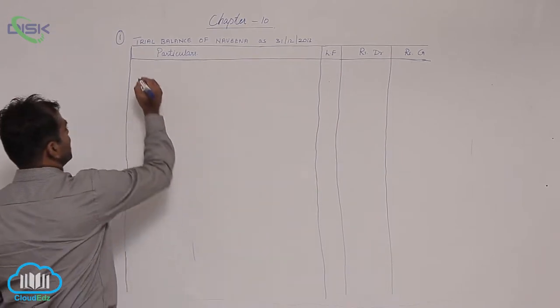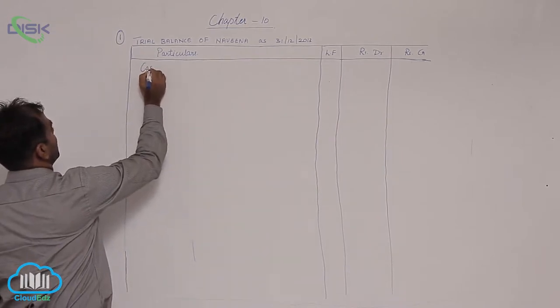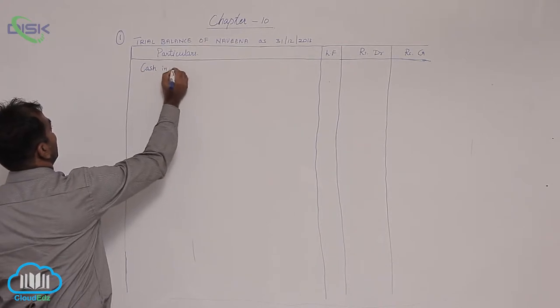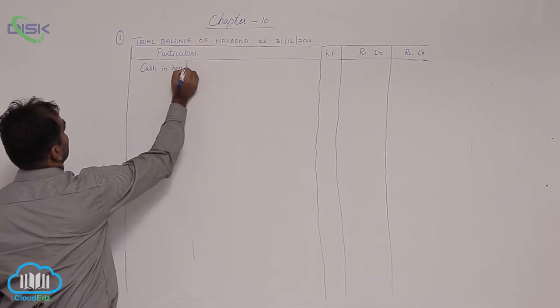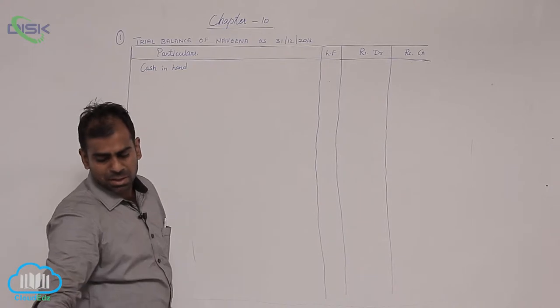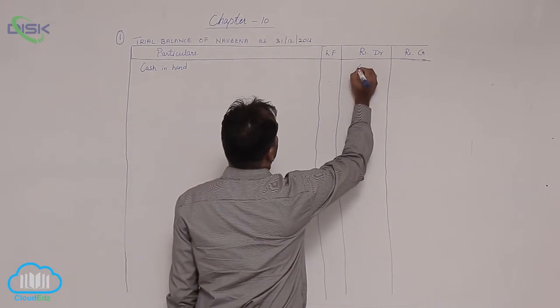So cash, cash is a real account asset. So we say cash in hand shows debit balance. So how much? 4500.